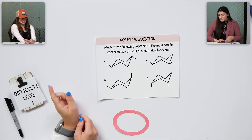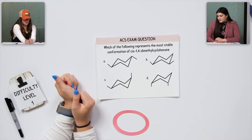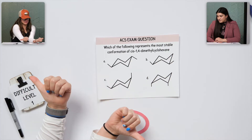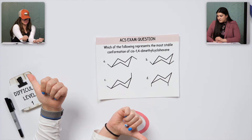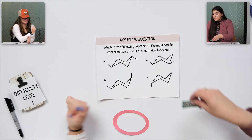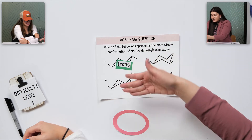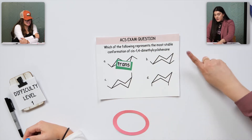Why? Because they're both equatorial, but they're going in different directions — one's up, one's down. So it's not cis, it's trans. Not that one. So that's out. What about B?